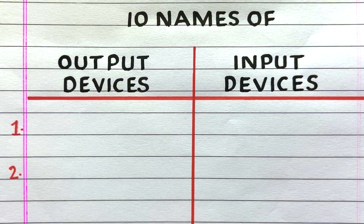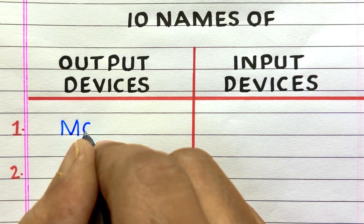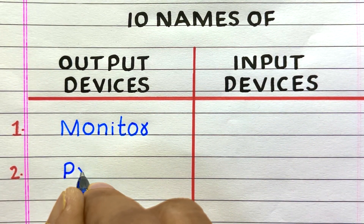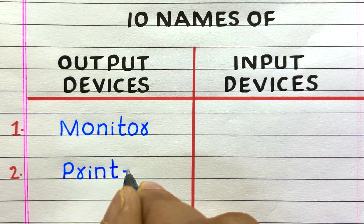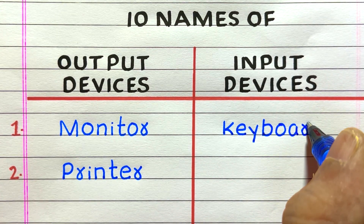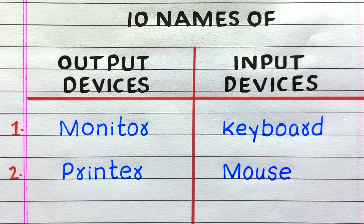Hello everyone, welcome to my channel 10 Lines Essay. In this video I'll write 10 names of output devices and input devices. The first output device in a computer is Monitor, second is Printer. The first input device in a computer is Keyboard, second is Mouse.